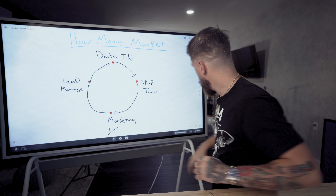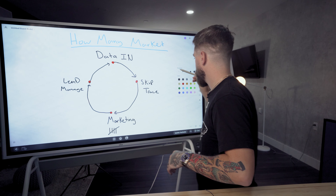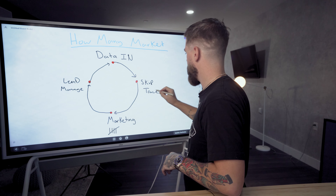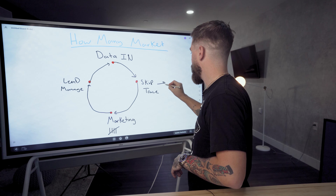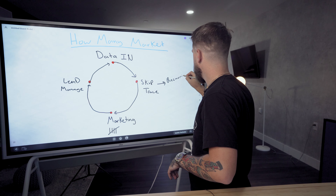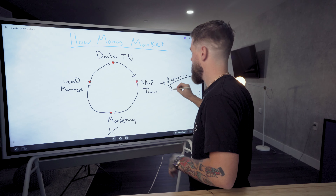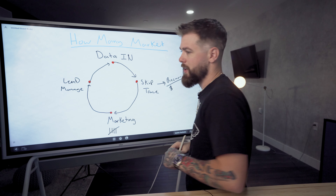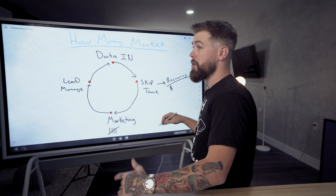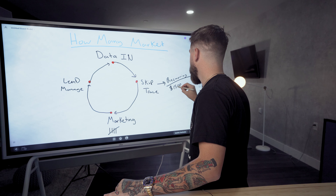What ends up happening is you're basically creating a recurring cost that isn't needed. If you're doing 10,000 new records a month at 15 cents a piece, that's $1,500 a month you've just committed to.